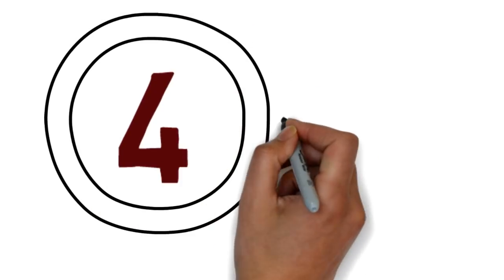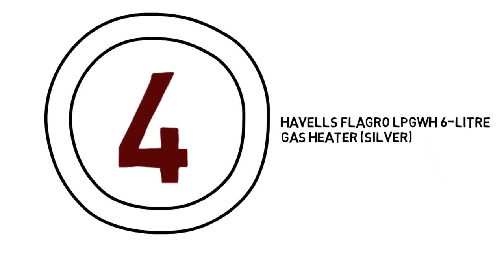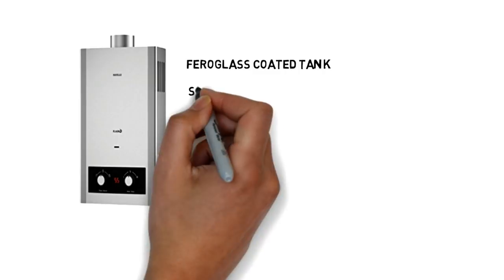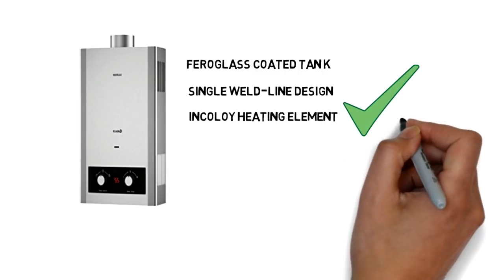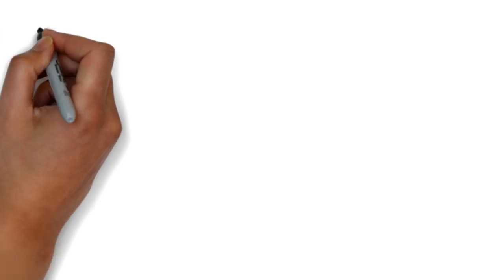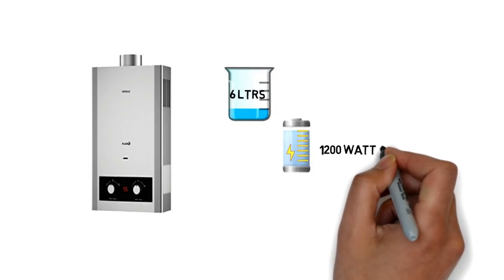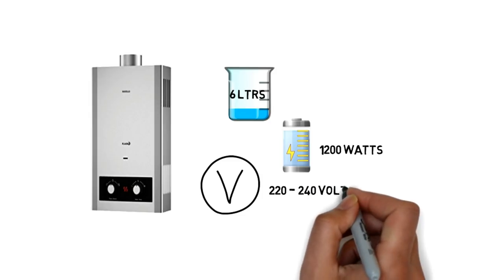Number 4: Hevels Flagrow LPG WH 6-Litre Gas Heater Silver Color. Hevels Flagrow Gas Heater comes with ferro-glass coated tank with single-weld-line design. And it has in-color heating element which heat very quickly. It provides energy-saving high-density PUF insulations. It has capacity of 6 liters and power output of 1200 watts. And operating voltage is 220 to 240 volts.